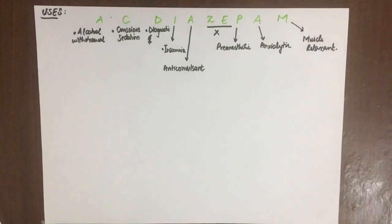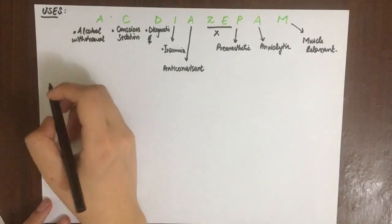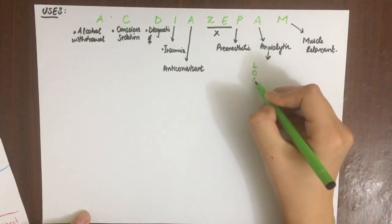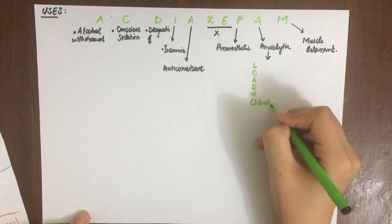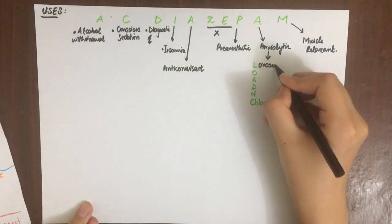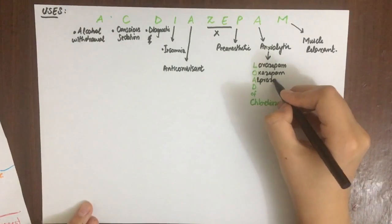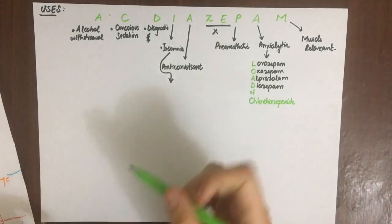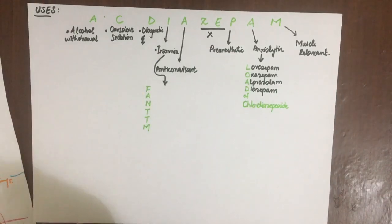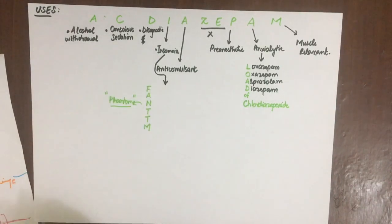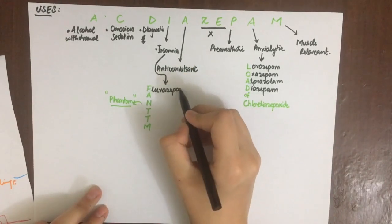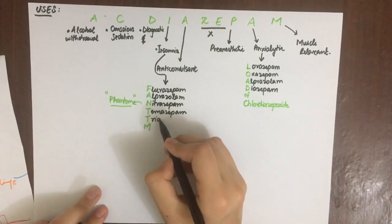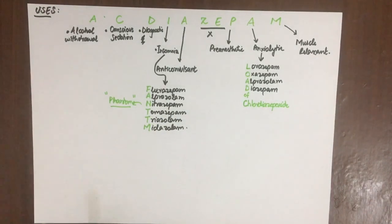Benzodiazepines are also used as pre-anesthetic medication due to their sedative, amnesic, and anxiolytic effects, and as muscle relaxants. The drugs used for anxiety disorders — mnemonic 'load off chlordiazepoxide' — include lorazepam, oxazepam, alprazolam, diazepam, and chlordiazepoxide. Drugs for insomnia use the mnemonic 'phantom' — flurazepam, alprazolam, nitrazepam, temazepam, triazolam, and midazolam.